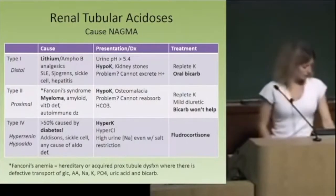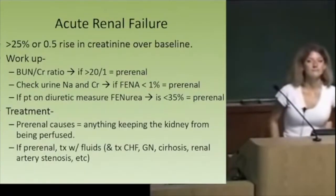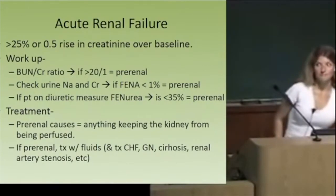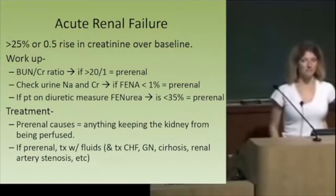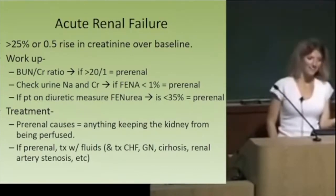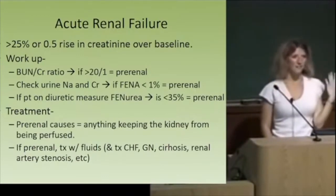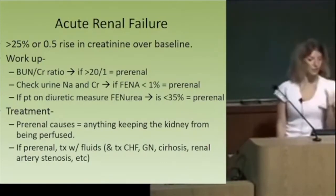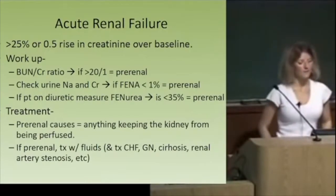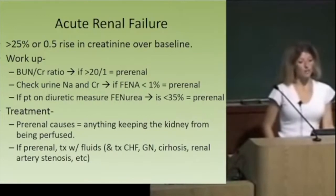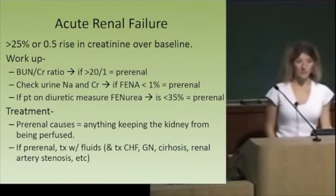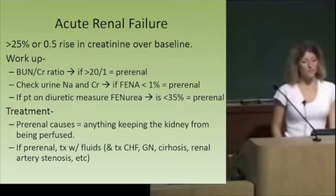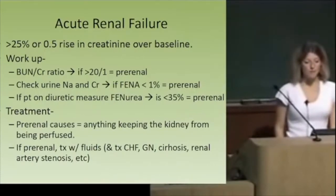Definition of acute renal failure: ARF has to do with creatinine going up. It's loosely defined — in general, an overall increase by 25% or a net increase of 0.5 over baseline is acute renal failure. To work it up, you want the BUN-to-creatinine ratio, which can help distinguish pre-renal from intrinsic renal causes. You'll also want urine sodium and creatinine to calculate the FENa. If the patient's on a diuretic, FENa is not reliable — you need to calculate the FENumea instead, because diuretics cause sodium to spill regardless of the body's actual state.